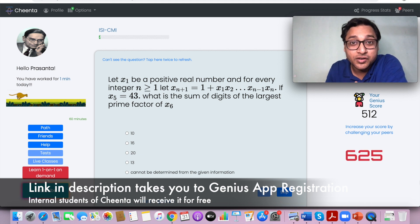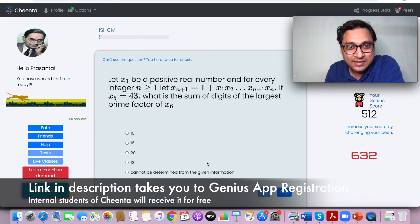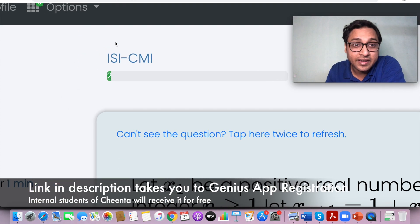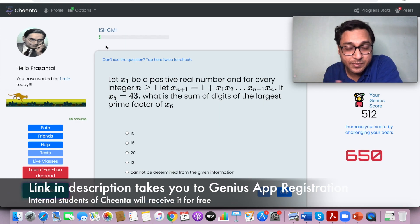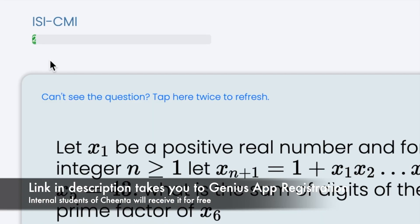When you start logging into the system, the system immediately starts giving you practice problems which are related to ISI and CMI entrance for this particular user account. Of course, this will be different for Olympiad aspirants and other people. So if you are preparing for Math Olympiad, then this will show Math Olympiad.